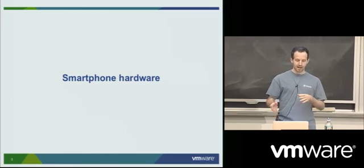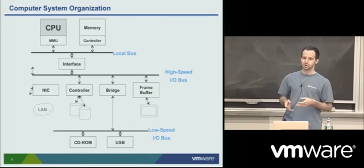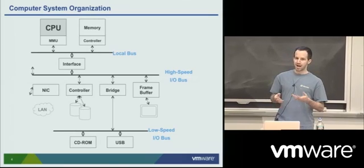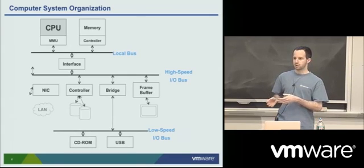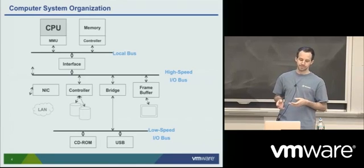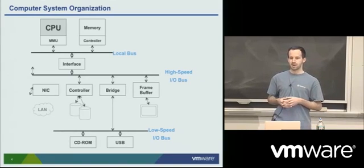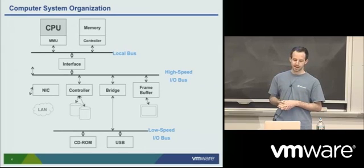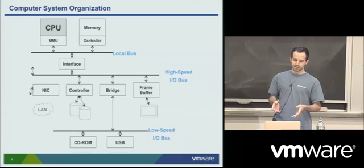So, smartphone hardware. The slide here is exactly the same slide you saw on Monday which Prash presented, giving an overview of what a computer system looks like. At the top you have things like the CPU, MMU, and actual memory — components Prash spoke about at length in terms of virtualization. Then there are all these other parts of the system — things like network controllers, USB controllers, CD-ROM, frame buffer to display contents of the virtual machine — and these are the components we're interested in virtualizing and presenting up to our VM.